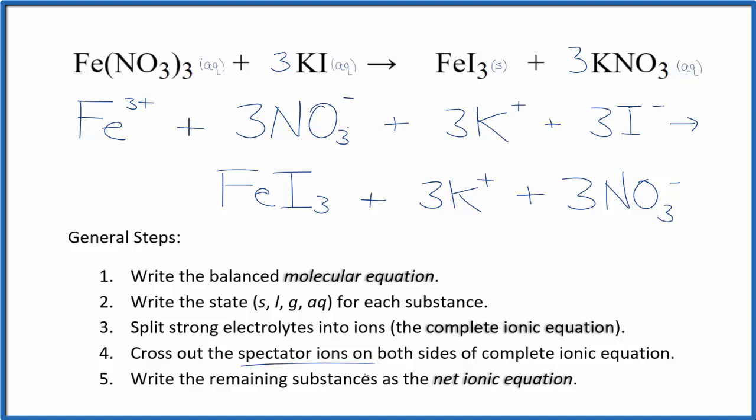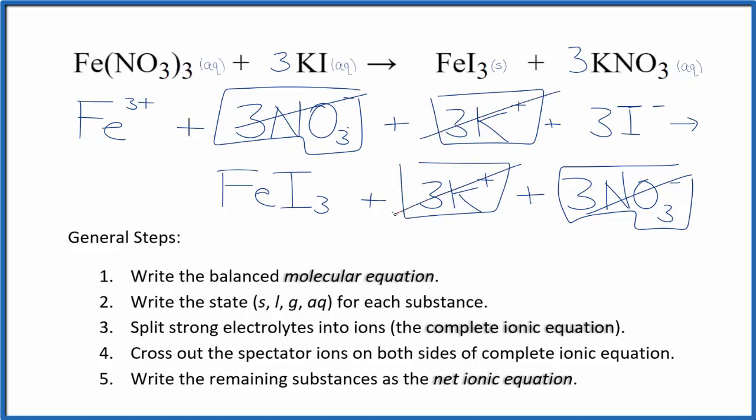Now we cross out the spectator ions. They're on both sides. So in reactants here, we have three nitrate ions. In the products, three nitrate ions. Spectator ions, which we cross out. Three potassium ions, and then three potassium ions here in the products. So you can cross those out.